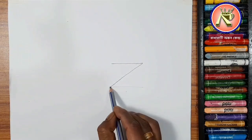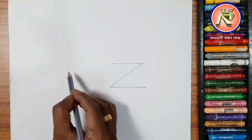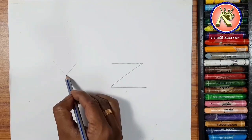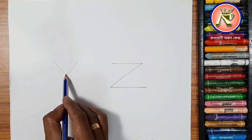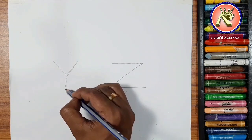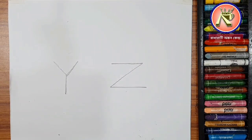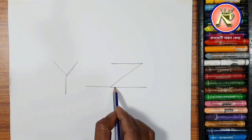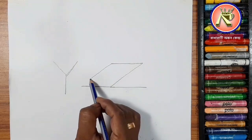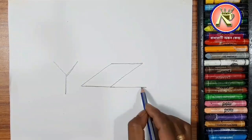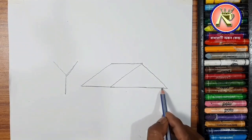I am going to write Y and Z. I am going to write Z. I am going to write Y. Y and Z. I am going to write Y and Z. I am going to write Z. I am going to write Z, and I am going to write X, and I am going to write Z.